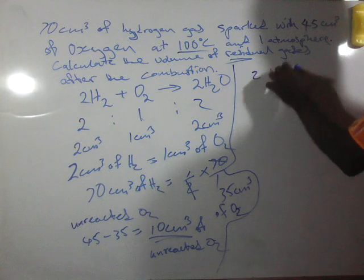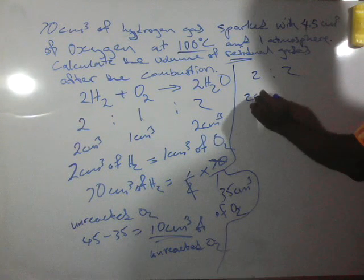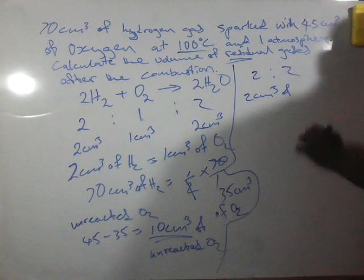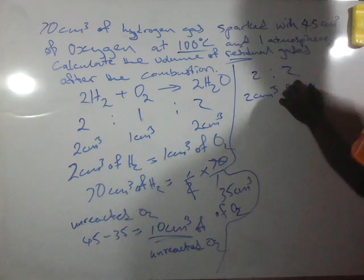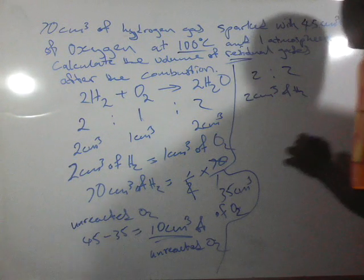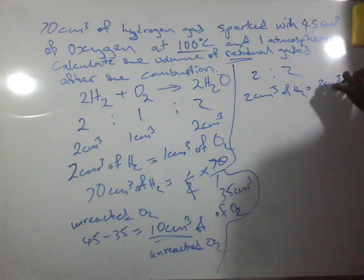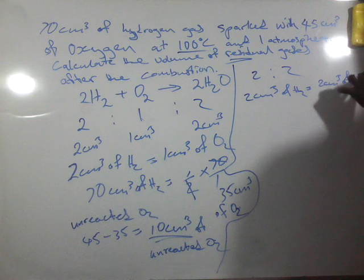That is what we are going to get, because since they are in the ratio of 2 is to 2, that means 2 cm³ of hydrogen from the equation will give us 2 cm³ of water or steam.